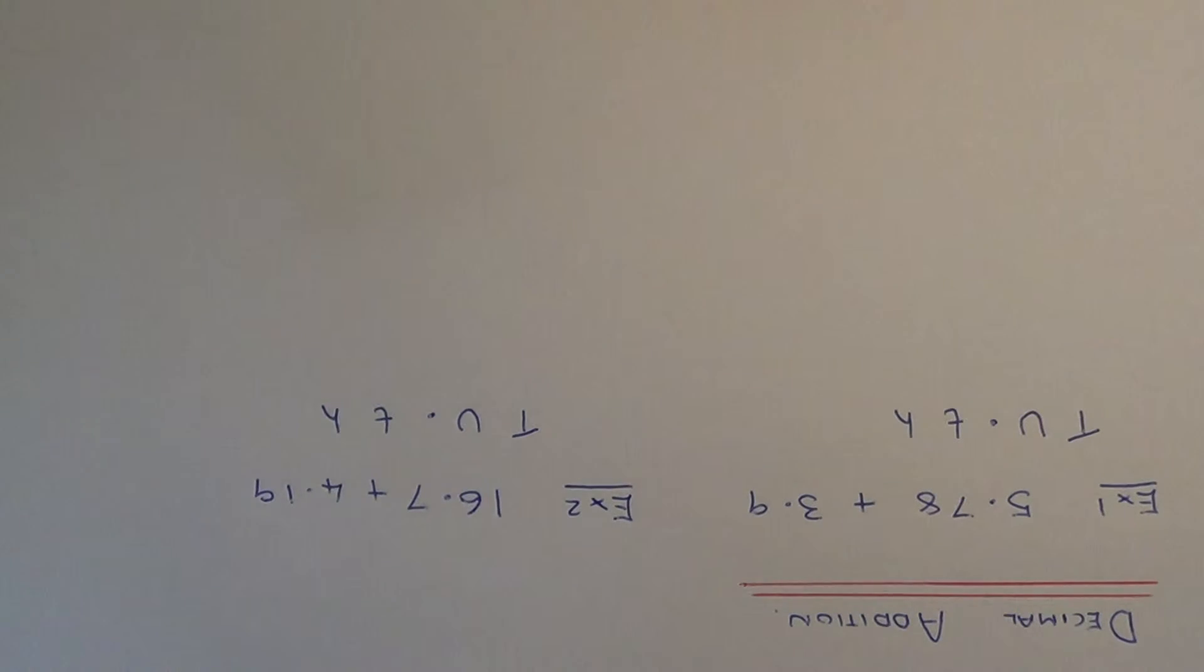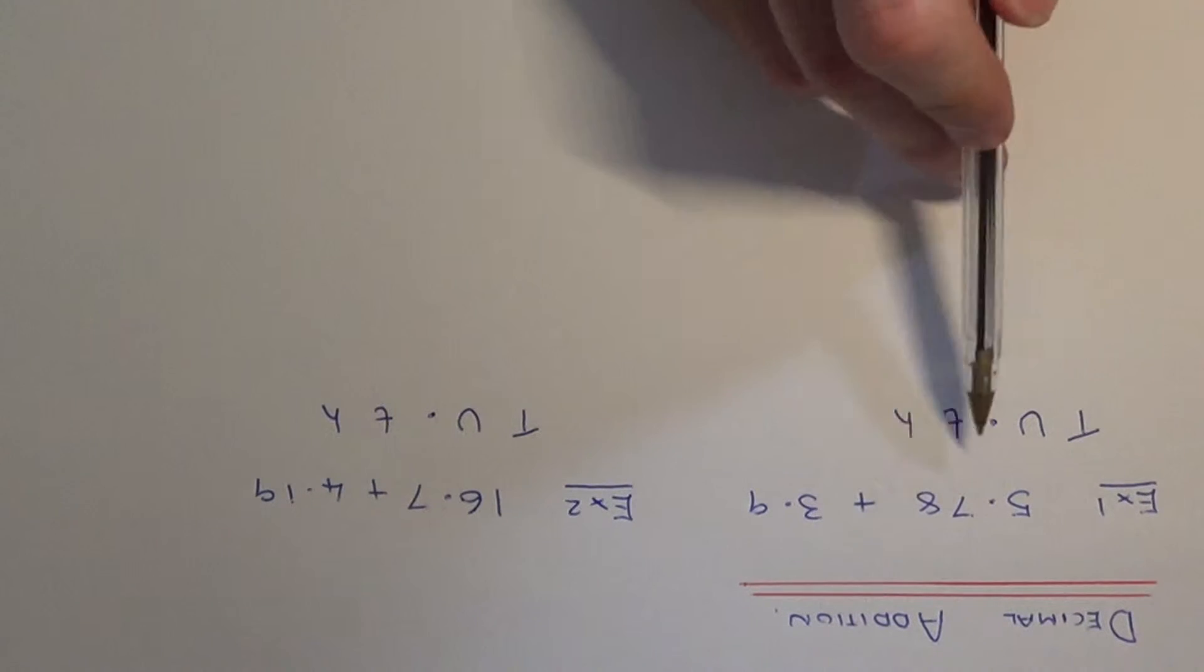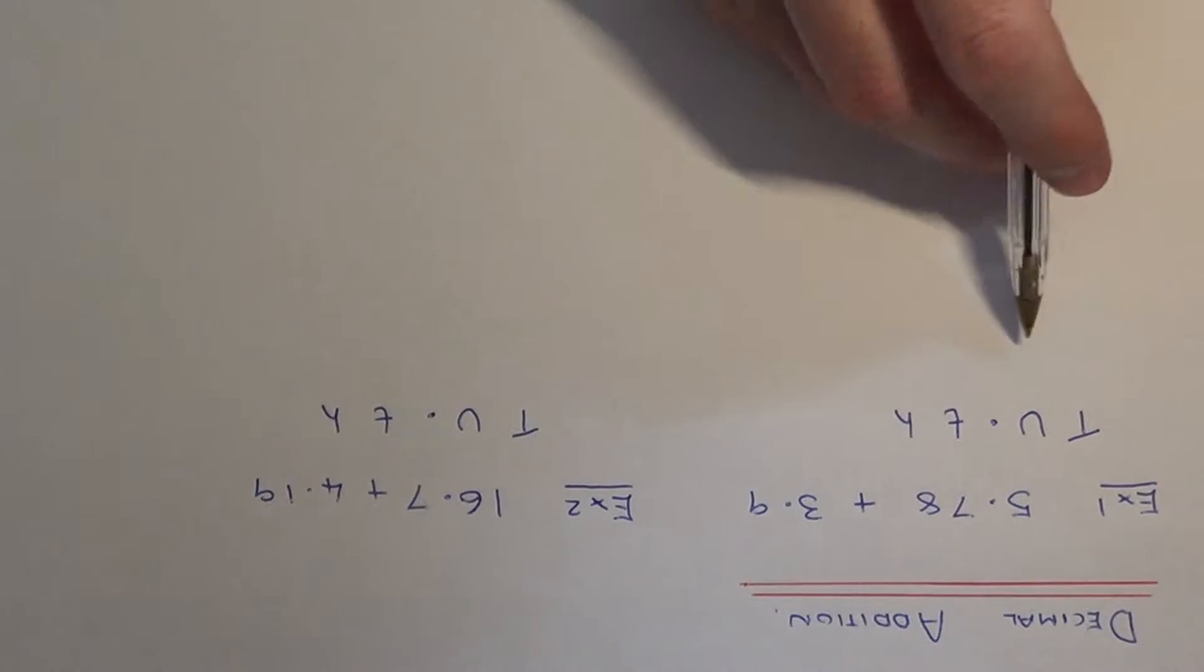Hi, today I'm going to show you how to add two decimals together. Let's have a look at example one. We need to add together 5.78 and 3.9.